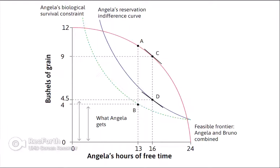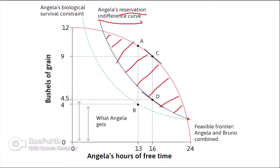Because the reservation option exists, Angela is able to decline if the landlord doesn't offer her enough. The landlord must offer her not just enough bushels from cultivating the land to make it worthwhile — we know anything above her reservation indifference curve is economically feasible for Angela. She is indifferent between working zero hours and receiving government welfare at subsistence, versus working eight hours at point D and receiving extra bushels of grain.